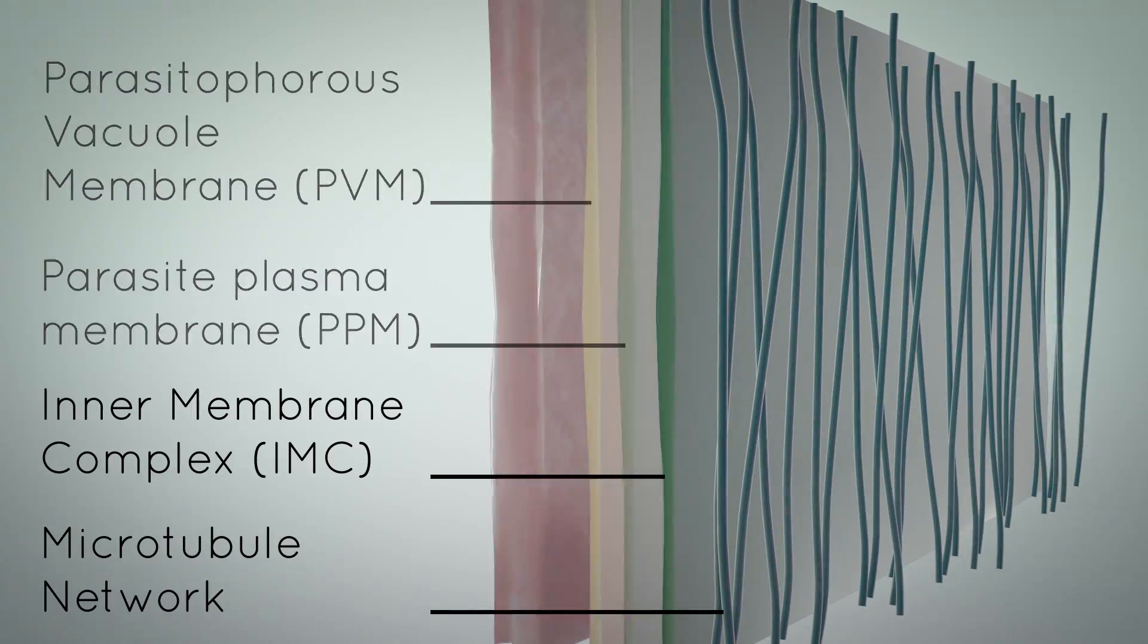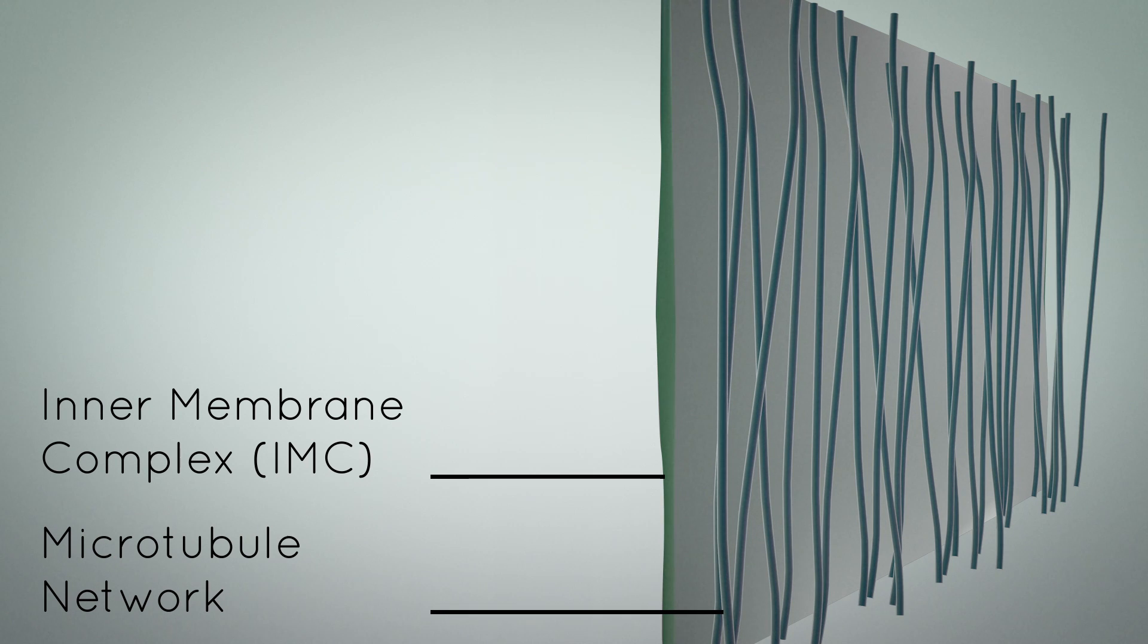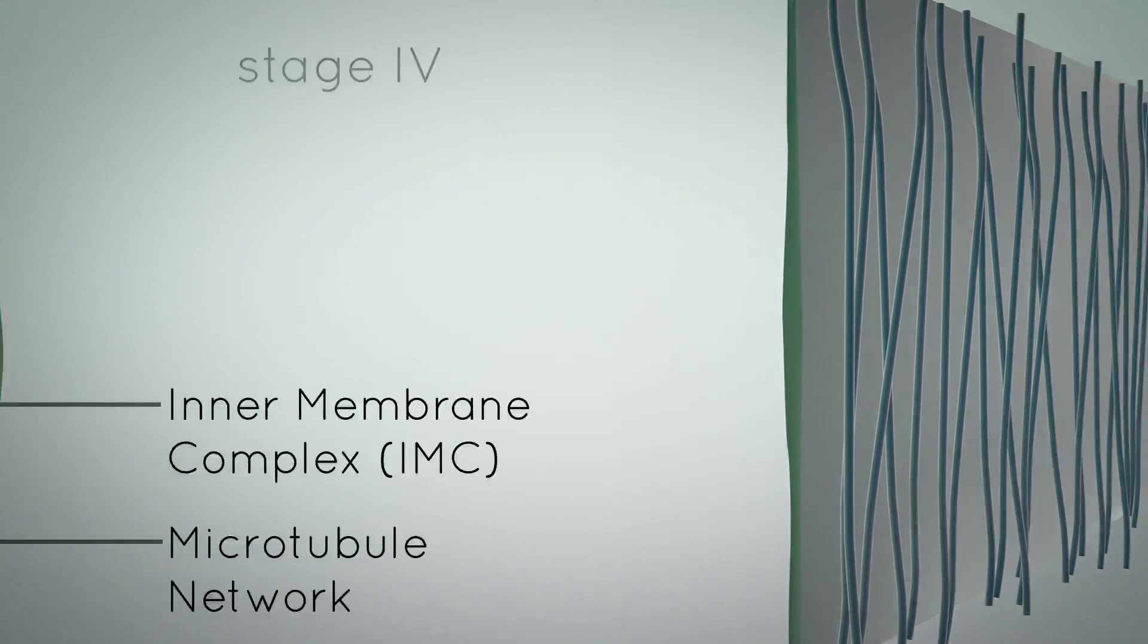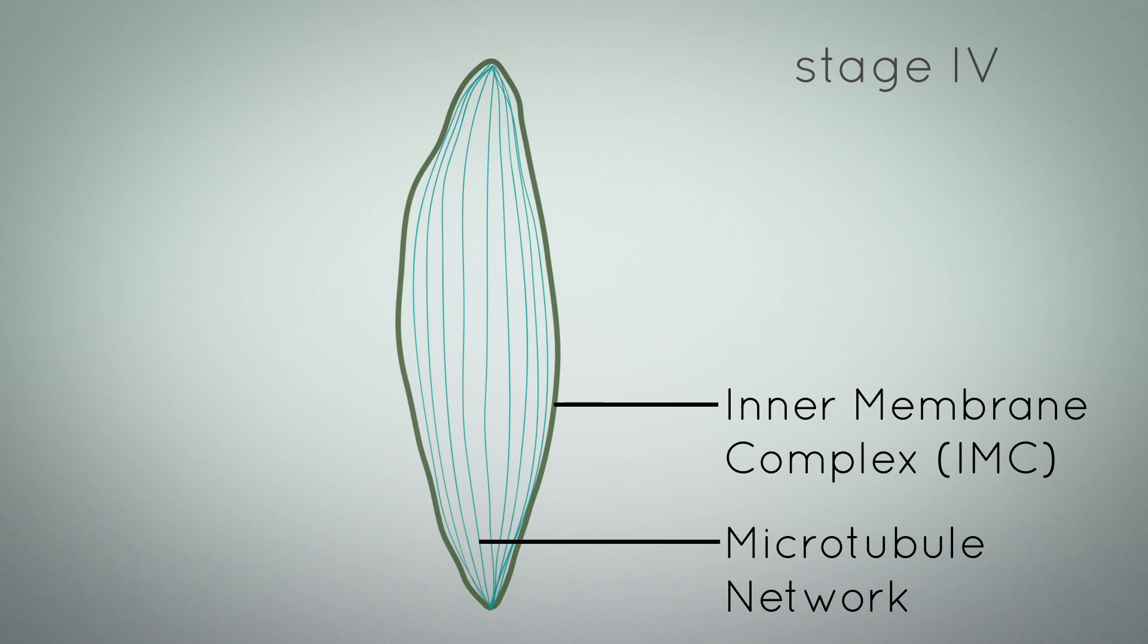During maturation, the IMC and the microtubule network expand around the periphery, thereby influencing cell shape. During stage four, the IMC has been stretched and completely surrounds the parasite.